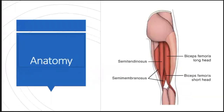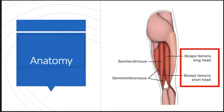Now let's talk about the anatomy. There are four hamstring muscles: the semitendinosus, semimembranosus, and the biceps femoris, which is split into the long head and the short head. What we generally see is that the biceps femoris long head is most commonly injured in team sports and hamstring injuries in general.